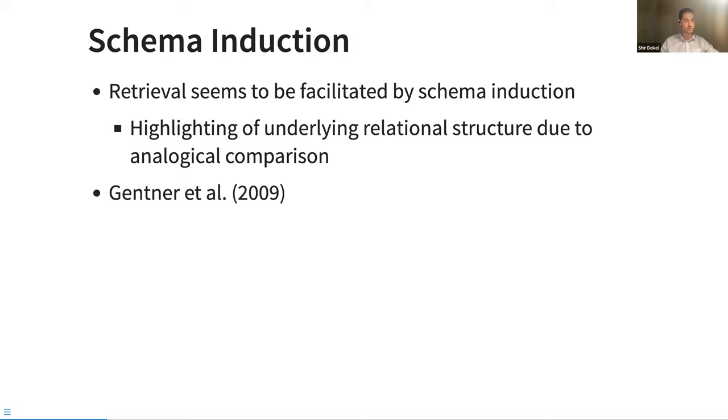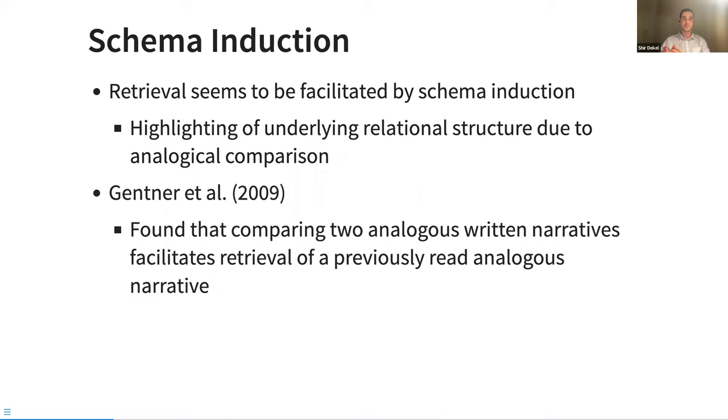A lot of this work was done by Gentner and colleagues, and the focal article that we were responding with this work was the 2009 paper, in which they got people to encode source material at time point one. And after some time, roughly 30 minutes, they got them to do some comparisons between material that was also analogous. And they found that when people compared stories, or in that case negotiations that had the same underlying principle and relational structure, they were more likely to retrieve the source material that was in fact analogous.